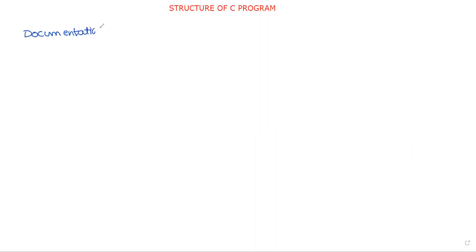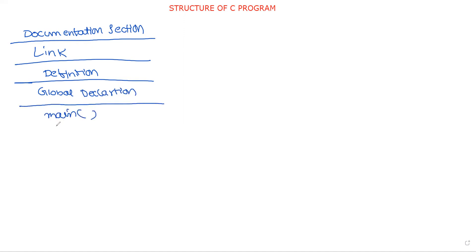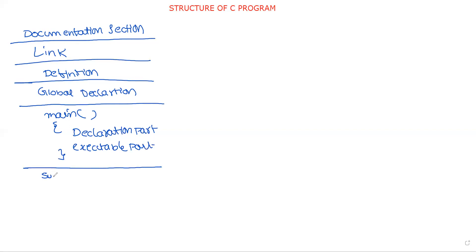The first section is the documentation section, then the link section, definition section, global declaration section, and the main function. Under the main function we have two things: one is the declaration part and another is the executable part. After that comes the subprogram section, under which we define our user-defined functions — function one, function two, and so on.